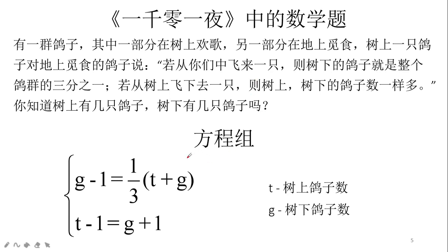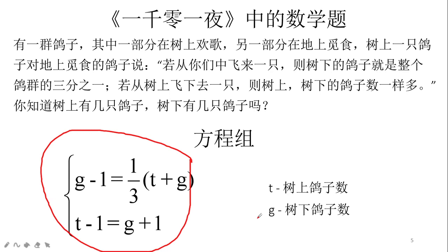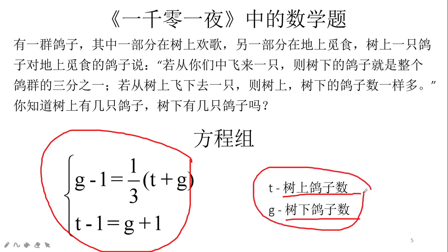这就是题目的方程组。方程组里的T是树上的鸽子数，G是树下也就是地面上的鸽子数。有了这个方程组，我们就可以解出树上的鸽子数，也可以求出树下的鸽子数，这样就回答了题目的两个问题。